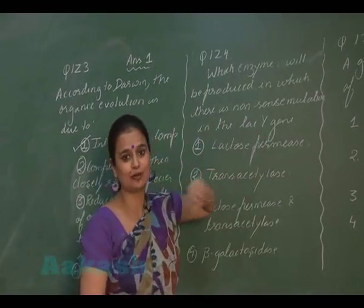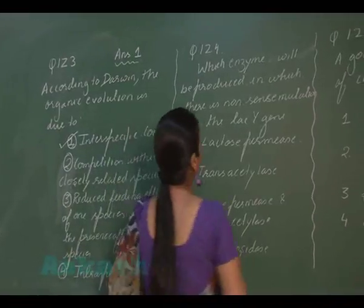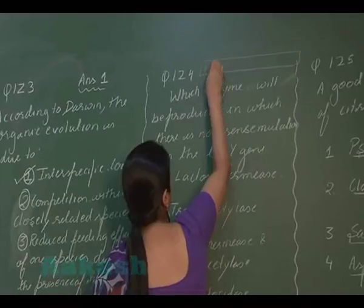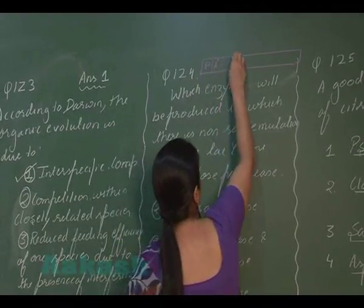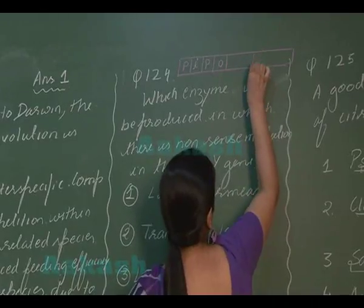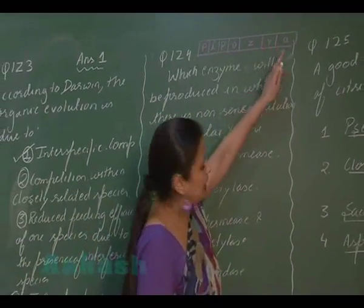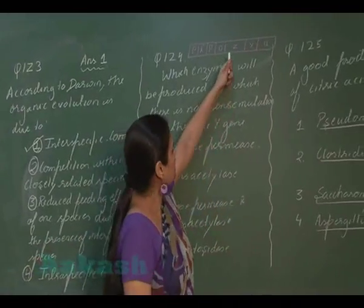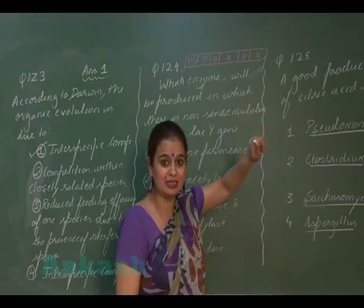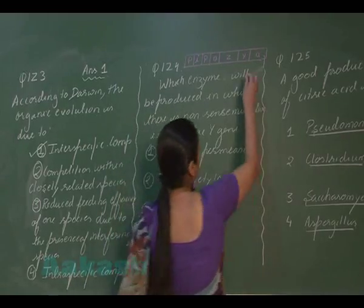Question 124: In the lac operon, if the Y gene undergoes nonsense mutation, which enzyme will be produced? The lac operon in E. coli is organized as: promoter, inhibitor gene, then promoter, operator, and ZYA genes. The Z gene forms beta-galactosidase, the Y gene forms permease, and the A gene forms transacetylase.